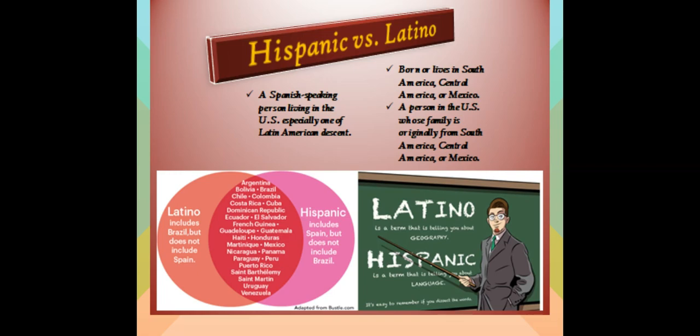There are several Latin American countries that use both Latino and Hispanic, such as those noted in the Venn diagram. A few examples are Puerto Rico, Argentina, Mexico, Cuba, and El Salvador.